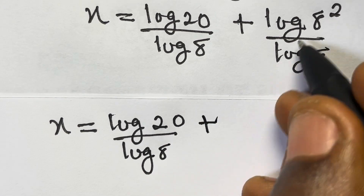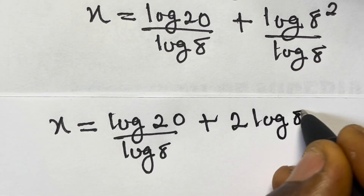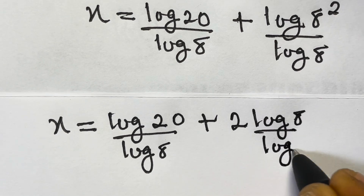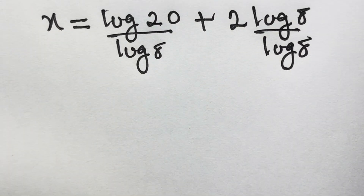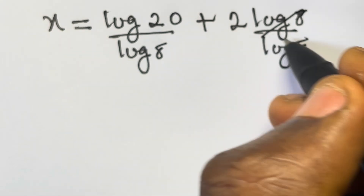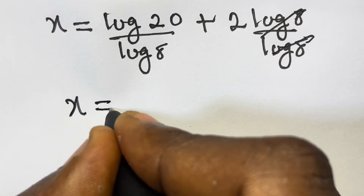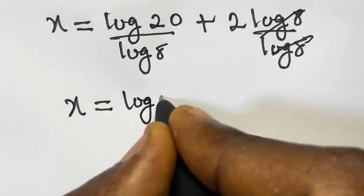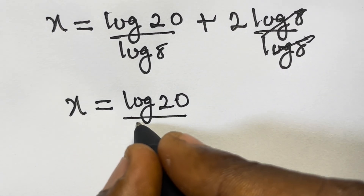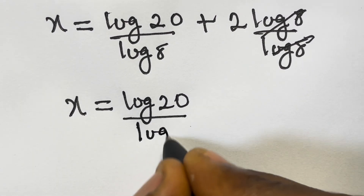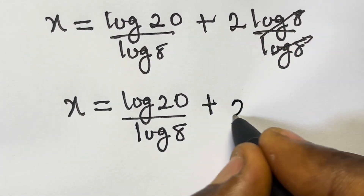Taking the power 2 forward, we have 2 log 8 divided by log 8. The log 8 terms cancel, leaving 2. So we now have x equals log 20 divided by log 8 plus 2.